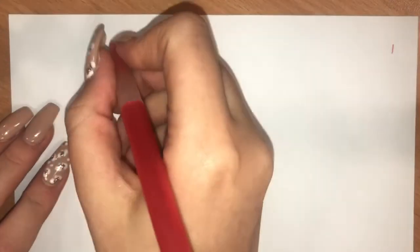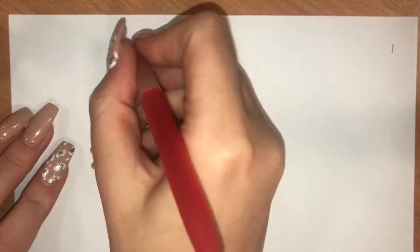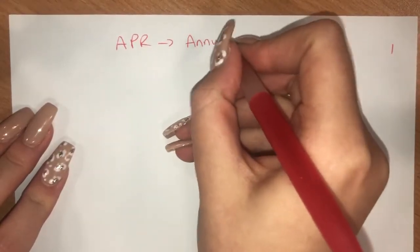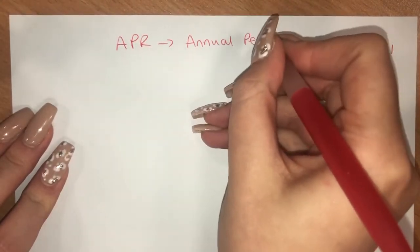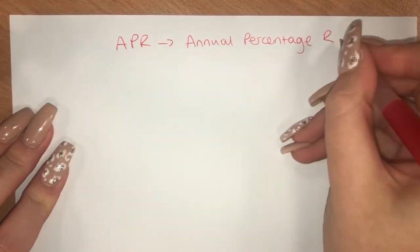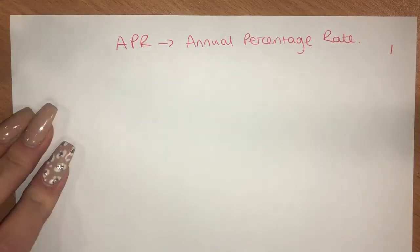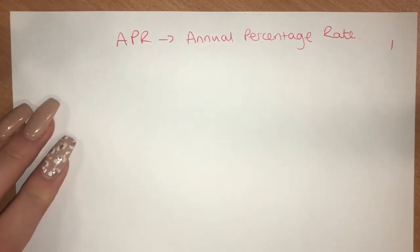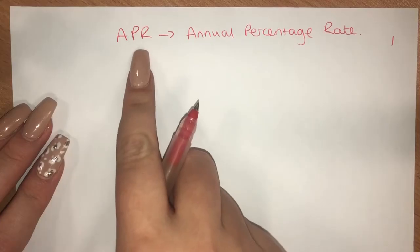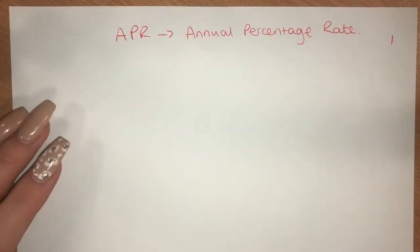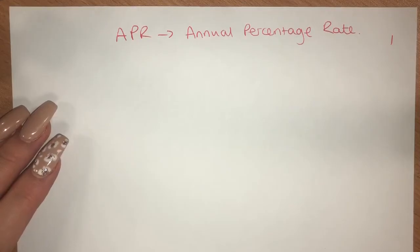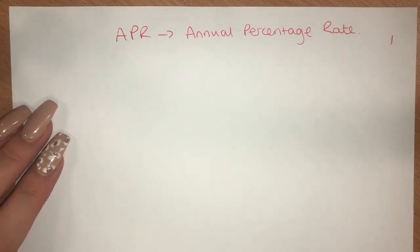Hi ladies, so I'm looking at APR today, which is the annual percentage rate, and we're going to look at some questions which might come up. So normally this is used to compare loans. I always try to think of the P as when I'm paying something out, as opposed to AER where the E is for earning, so saving. So this is more to do with loans.